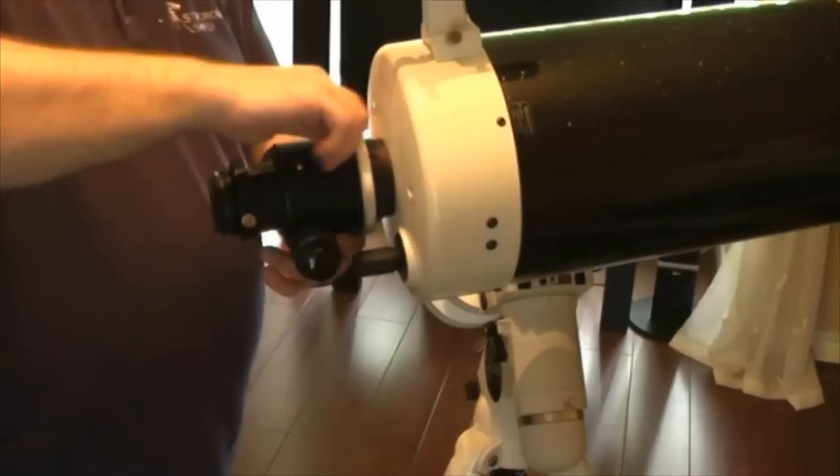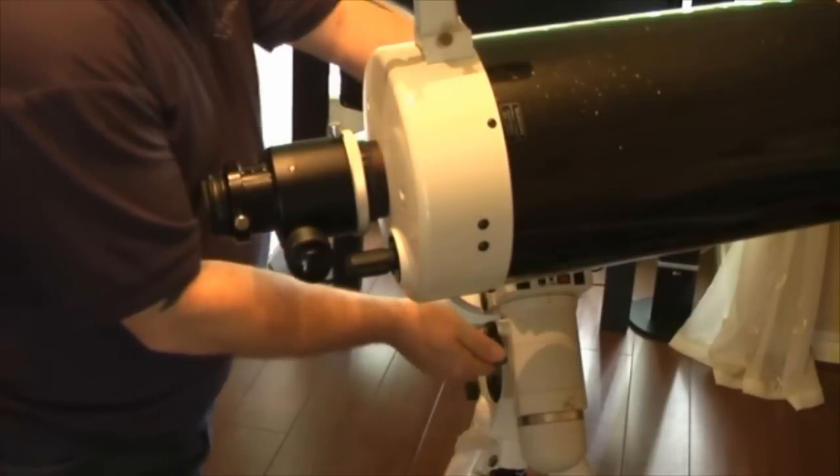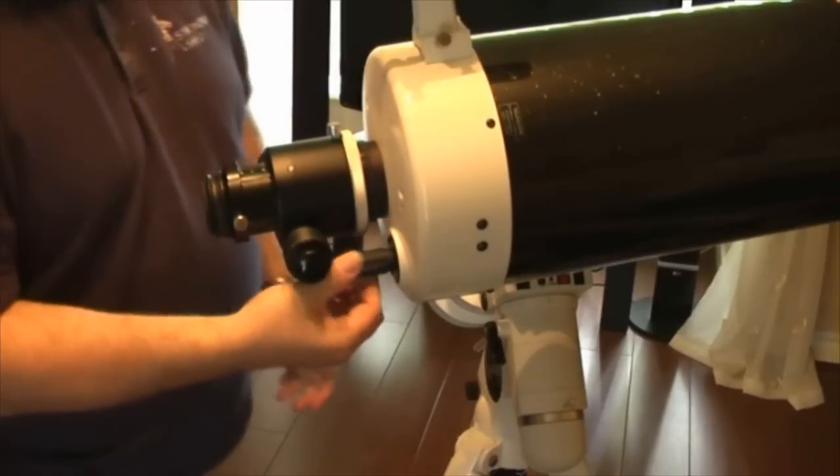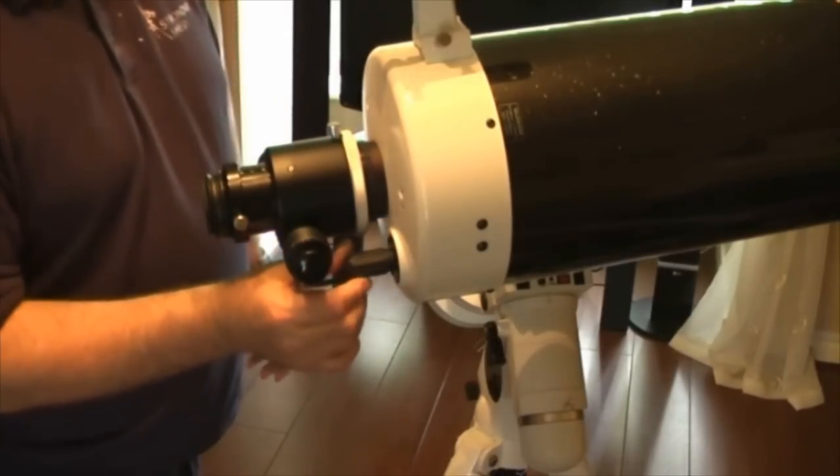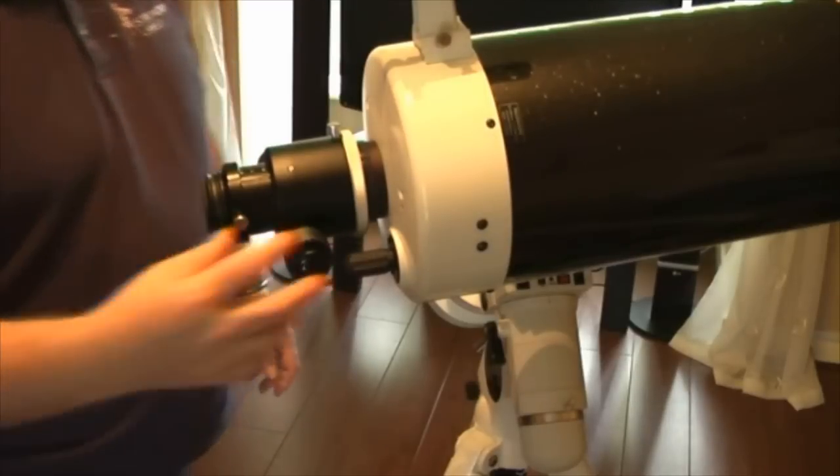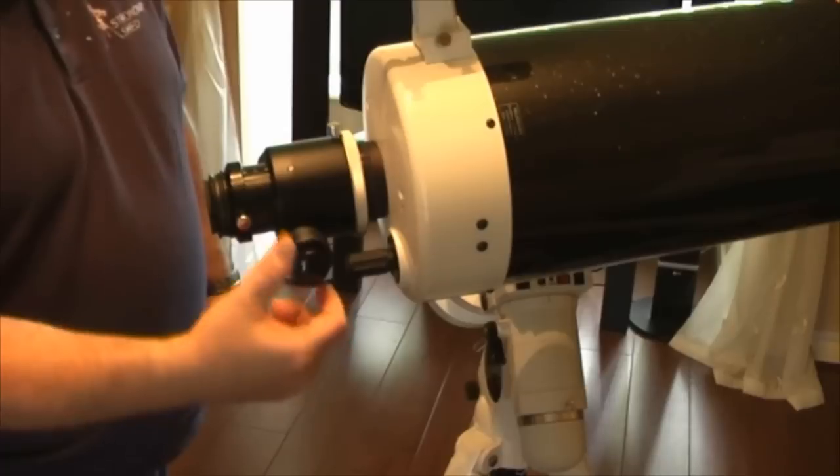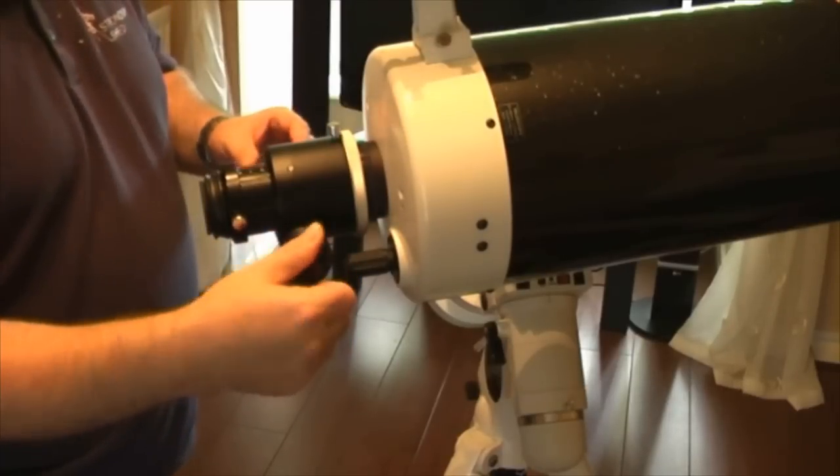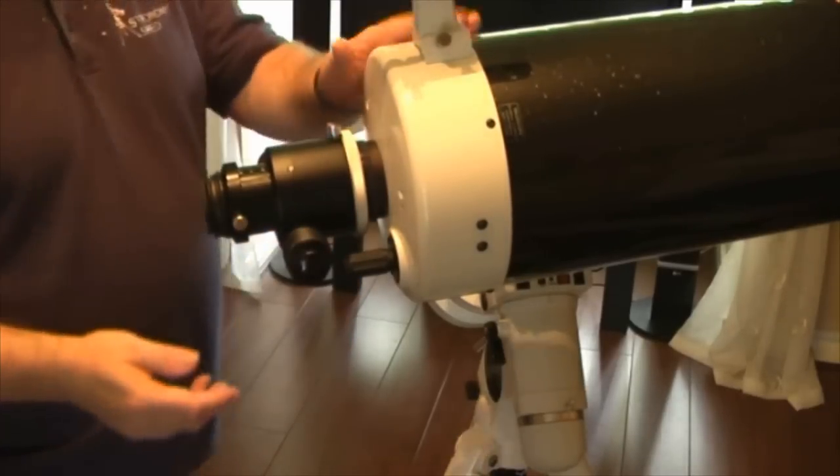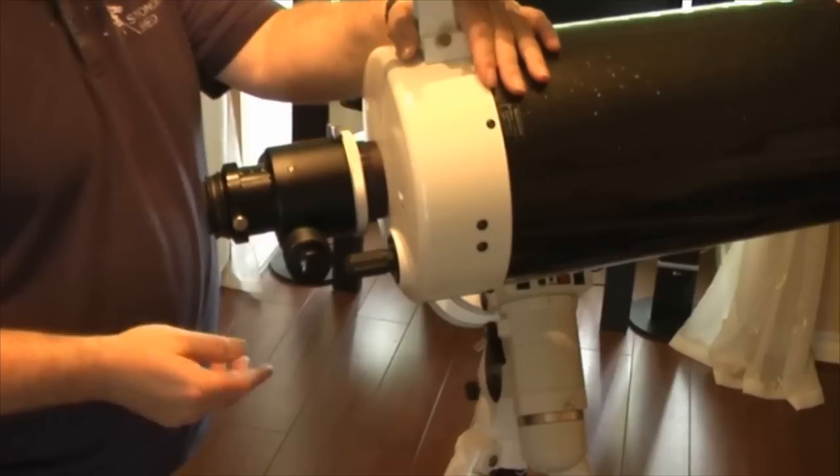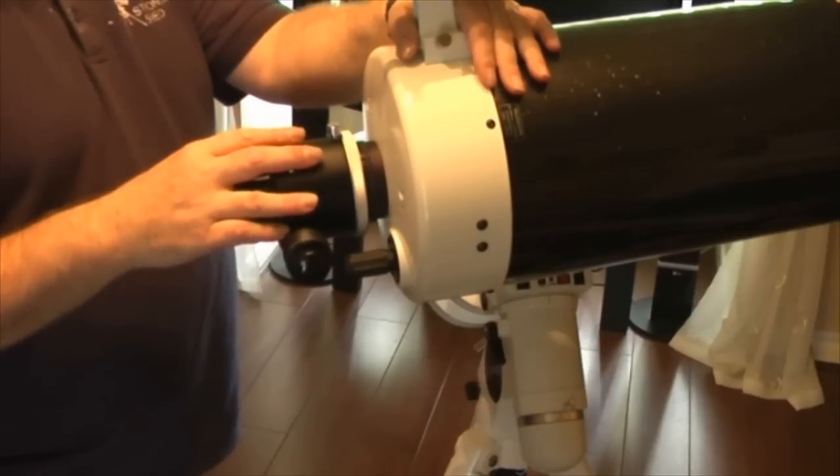So once this focuser is in position, I might just tighten everything up. What you do now is you use the focuser knob of the Mac to roughly focus. This is only just used as a rough focus now. Then you find focus with your aftermarket SCT focuser and it's just a very worthwhile mod to do on a Mac especially on the bigger ones. It just improves the performance 100% because they can be an absolute struggle to focus.